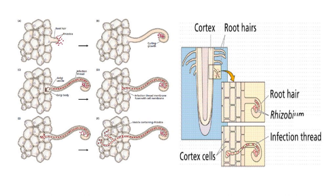The infection thread continues to grow beyond the root hair cell and penetrates the cortex cells. On entering the cortical cell, the infection thread branches and rhizobia are released into the cortical cell. Concurrent with the invasion of rhizobia, there occurs a rapid burst of cell division in the host cell. Rhizobia then change their shape to form cells called bacteroids. Inside the nodule, many bacteria are present in bacteroid form, which is an undivided stage that produces the enzyme nitrogenase. This enzyme reduces atmospheric nitrogen into ammonia — a process called nitrogen fixation.